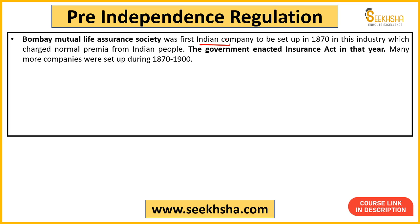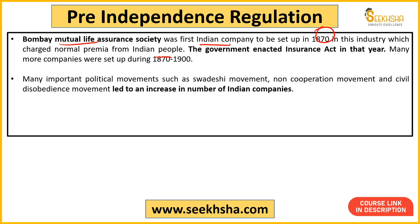पहली Indian company insurance sector में 1870 में आई — और वो थी Bombay Mutual Life Insurance Society। तब तक revolt of 1857 हो चुका था, Congress बनने वाली थी, हिंदुस्तानी लोग जागने शुरू हो गए थे। Middle class और upper middle class लोगों में से कुछ ने इसे शुरू किया। साथ ही सरकार ने भी Insurance Act 1870 लेकर आई, और इस Act के बाद और बहुत सी insurance companies India में आने लगीं।